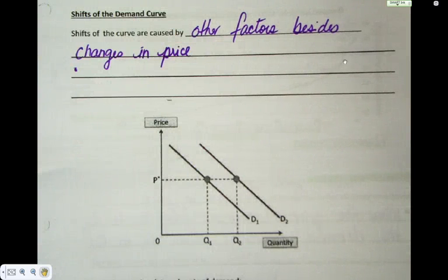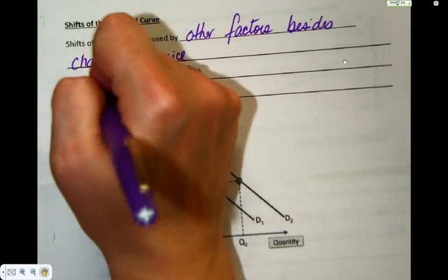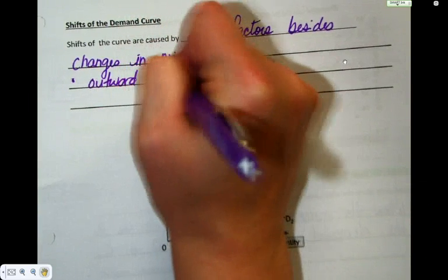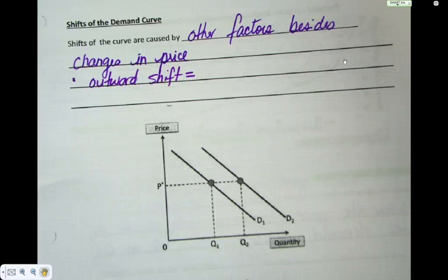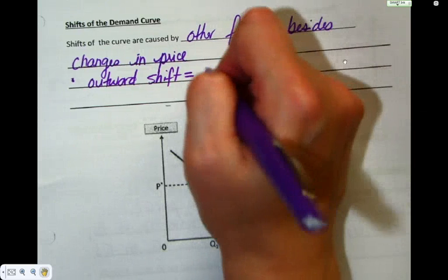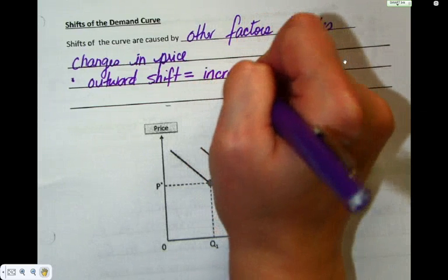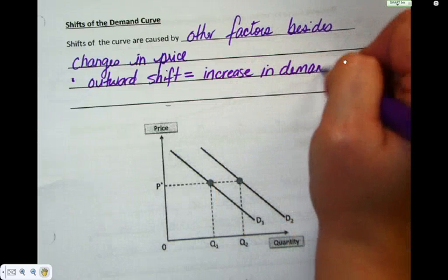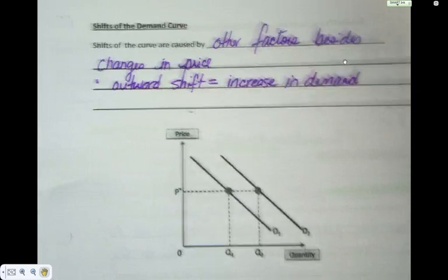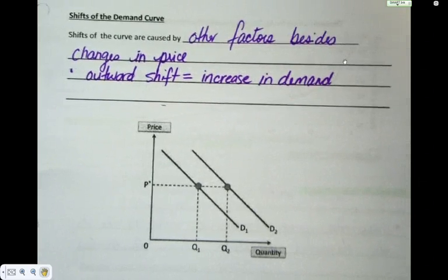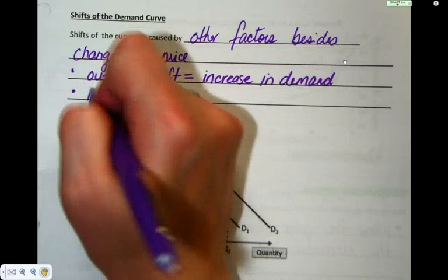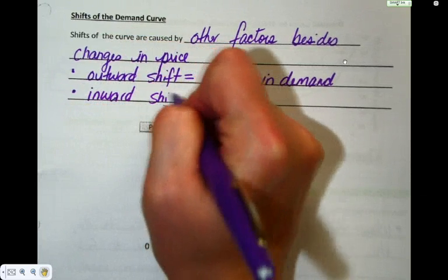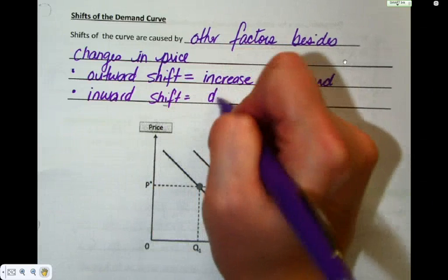Second point here, if you have an outward shift, this is an increase in demand. Just like with PPCs, it was an increase in production. Oh, you could tell me that was crooked. Inward shift, anyone want to guess? Decrease in demand.